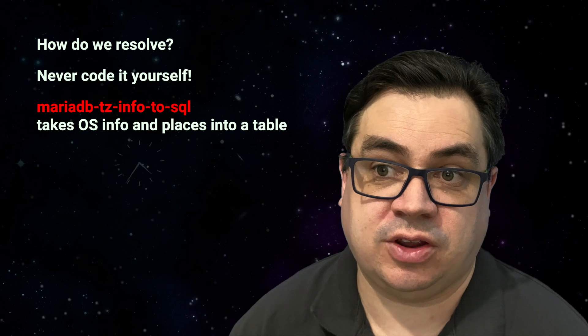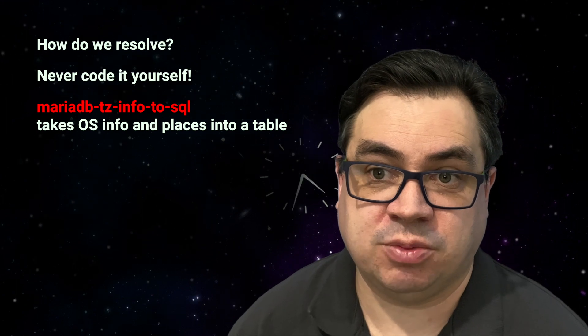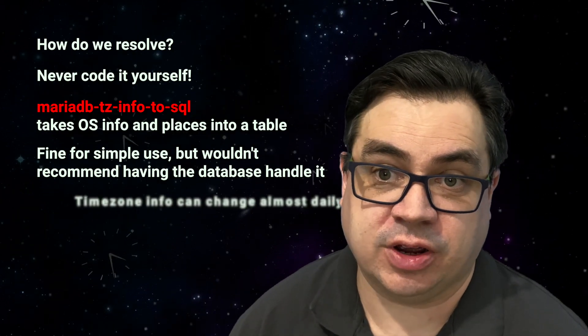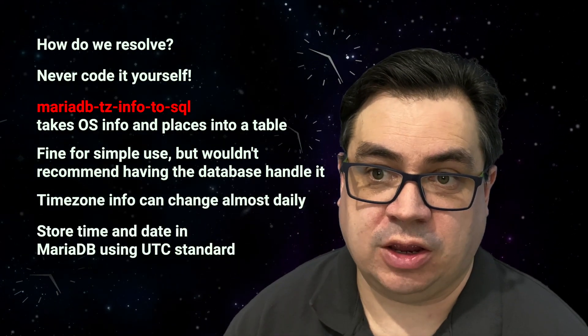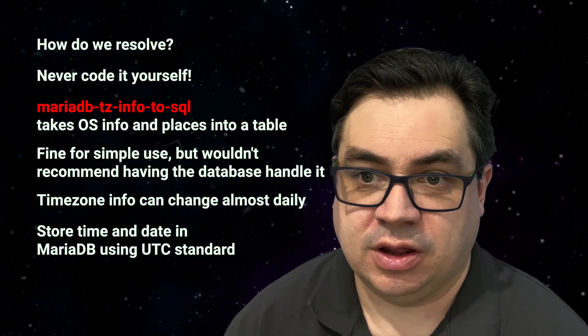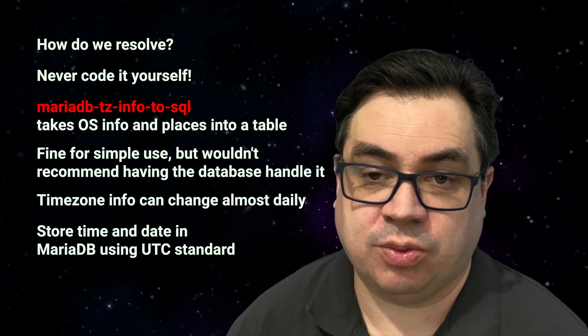So how do we resolve these two problems? First of all, never try to code this stuff yourself. Every operating system has fantastic libraries that keep track of all of this for you — use them, it will save you so much pain. MariaDB itself has a tool called MariaDB TZinfo to SQL, which takes the time zone information from the operating system and puts it into a table. For simple applications dealing with one time zone this is fine, but for anything where you may need more than one time zone I wouldn't recommend having the database handle this, because that time zone information can change on almost a daily basis and doesn't deal well with historical data.